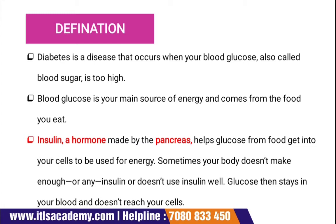Now, what is insulin? Insulin is a hormone that is made by the pancreas, and it regulates blood glucose in our body. It helps glucose — which we take from food and which is our main source of energy — get into the cells to be used for energy. When the digestive system converts food into the form of glucose, that glucose is a type of energy used by cells in our body.